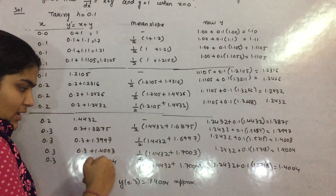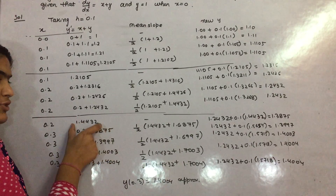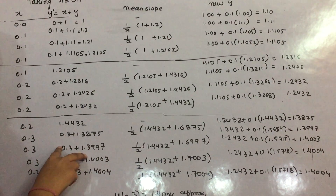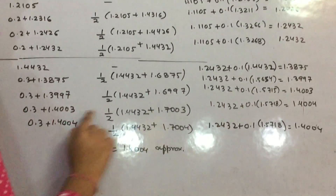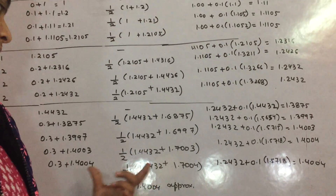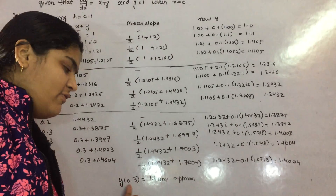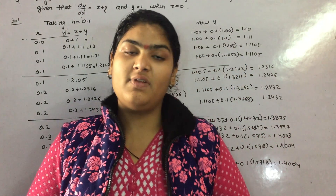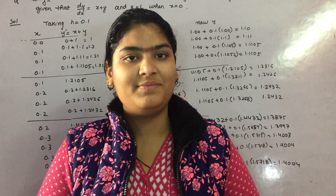In the third step, you keep the initial y-dash constant but your new y-dash changes: it becomes x plus the initial y value 1.3997 plus 0.3. Substitute all these values, and when the last two successive answers are the same, that is your converged value — your y at x equals 0.3. I hope you understand. In our next video we will discuss more ordinary differential equation solutions. Don't forget to subscribe. Thank you, keep smiling.